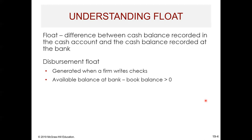The first type of float is called a disbursement float — that's when we as a firm are writing checks. When we write a check, we'll typically record it in our accounting system, which automatically does a journal entry to reduce cash. So our book balance is now less — it's minus the amount of the check we just wrote. However, that check has not been sent to whoever we're paying, and it hasn't cleared our bank. So the available balance at the bank minus the book balance will be greater than zero. This is what we call a disbursement float. You can look online at your bank account and think you have all this money, but if you don't look at your book balance, you may not realize you've written checks that will clear at some future date.